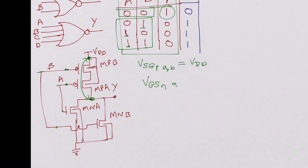For one of the N channel devices, VGS of A or B or both would be VDD, which is greater than the threshold voltage of the NMOS. So MNA or MNB, one of these is on, which will short the output to ground. That's how we get this truth table.